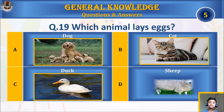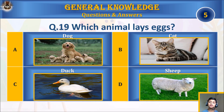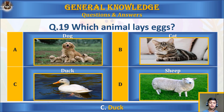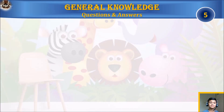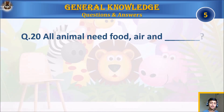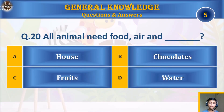Question nineteen: which animal lays eggs? A) dog, B) cat, C) duck, or D) sheep? Your time starts. The answer is C) duck.